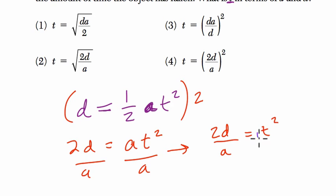But we want to know what t is, so we take the square root of t squared and take the square root of both sides. So that brings us to our answer, it's the square root of 2d over a.